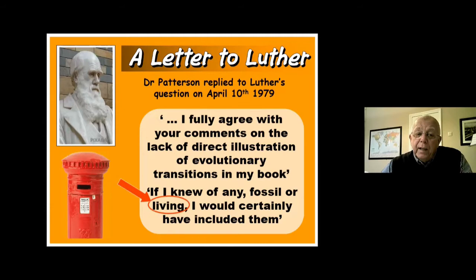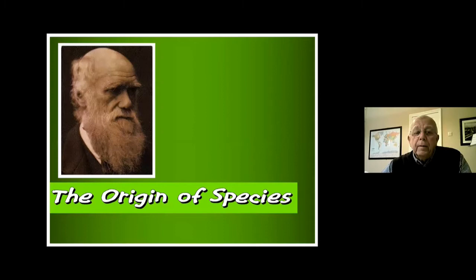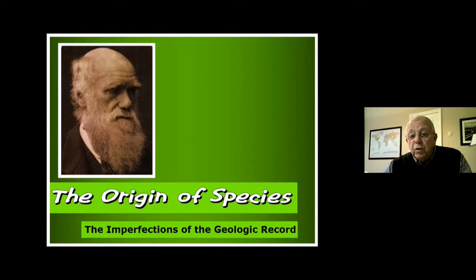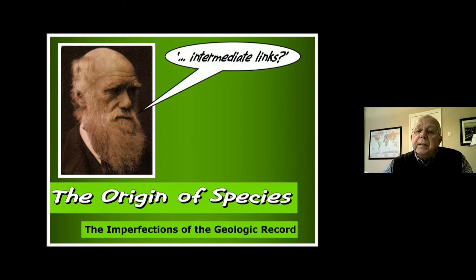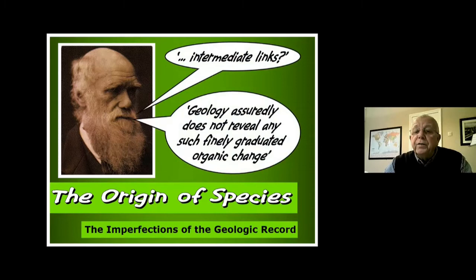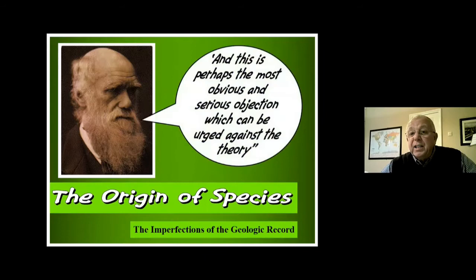The word 'living' is important — if evolution is going on as they suggest, even today, why don't we see the in-between stages right now in 2020? Darwin himself, in his book 'The Origin of Species,' in the chapter on the imperfections of the geologic record, wrote: 'Geology assuredly does not reveal any such finely graduated organic change, and this is perhaps the most obvious and serious objection which can be urged against the theory.' Darwin admitted the rocks didn't present the intermediate stages.